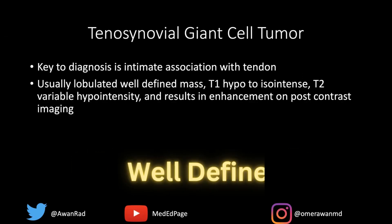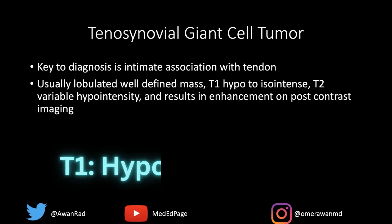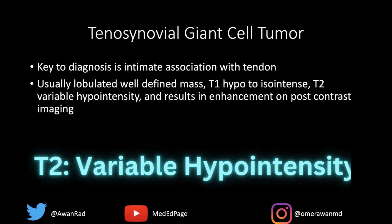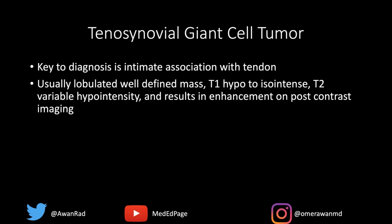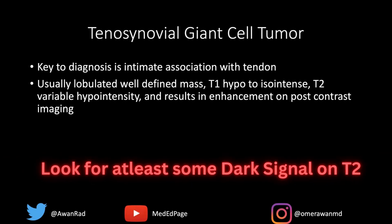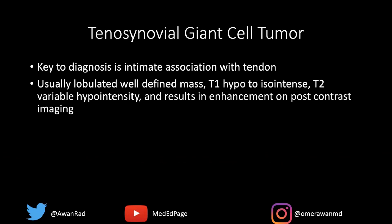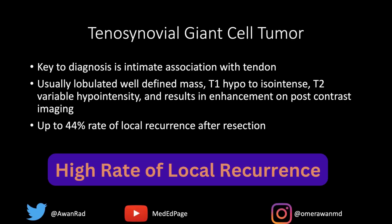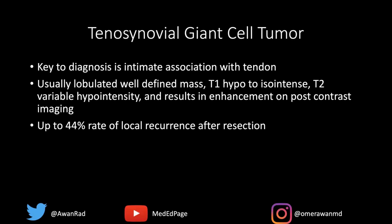Typically on MRI, it's well-defined and will be dark — isointense to muscle or hypointense — on T1. On T2, signal can be very variable, ranging from hypointense to even brighter than muscle, but there's often some dark signal as in our index case, because that represents hemosiderin or fibrous tissue. Look for even a trace amount of dark signal on T2. These typically enhance on post-contrast imaging. It's important to note that after resection, they have a high rate of local recurrence — up to 44%.